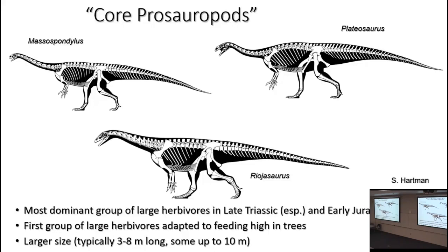Today we have examples like giraffes that can do that, along with elephants and other groups. These core prosauropods were big — a typical form is in the 3 to 8 meter range, with a couple of very large ones up to about 10 meters.